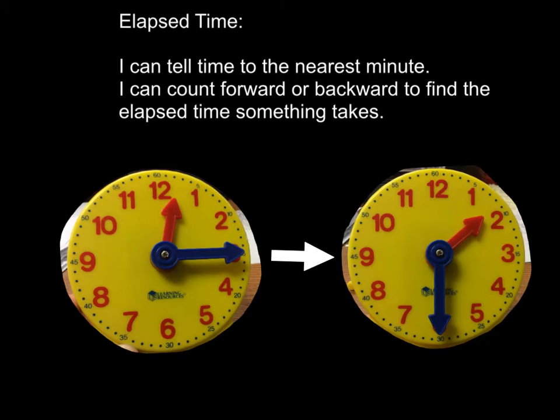So here's your quick definition, explanation of elapsed time. If this time is when something began, then this would be the time that it ends. I want to know how much time that took. What was the elapsed time? So how long did it take to get from the beginning to the end is elapsed time.